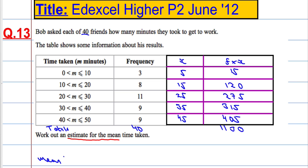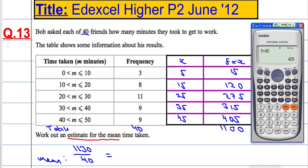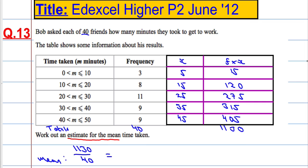Normally what we do is the total time 1130 divided by how many people there were, which is 40. 1130 divided by 40 gives me an answer of 28.25. And that's how we calculate the mean for this grouped data.